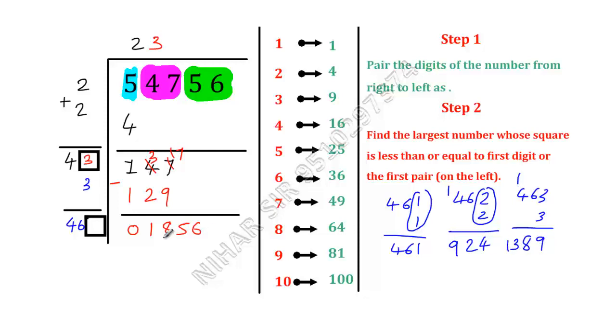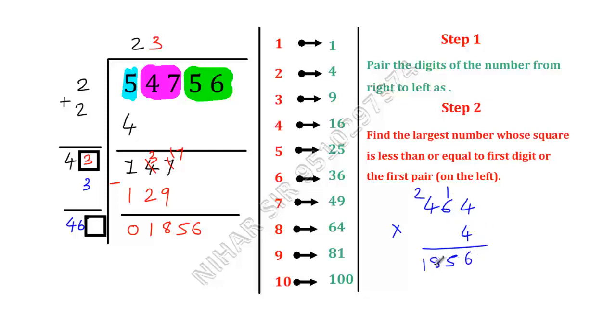Let us try 464 times 4, so that will be 4 times 4, 16, 1, 4 times 6, 24 plus 1, 25, 4 times 4, 16 plus 2, 18, 1, 8, 5, 6.